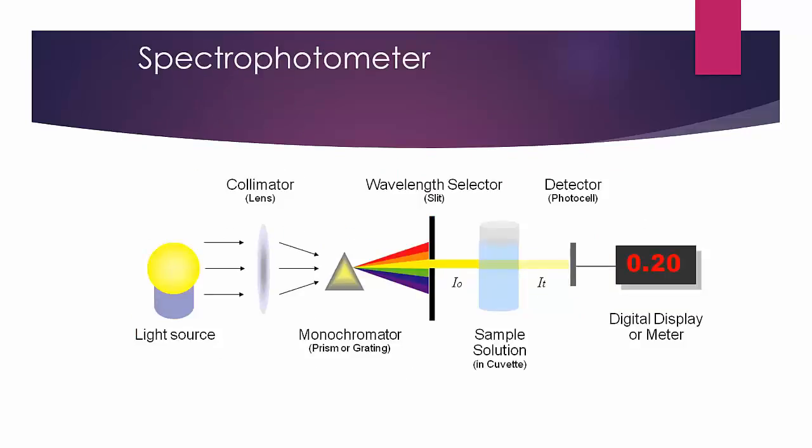So in science, we want to make qualitative observations. Do you see a color change in the test tube? But when possible, we also want to make quantitative measurements. And that is what we're using the spectrophotometer for.